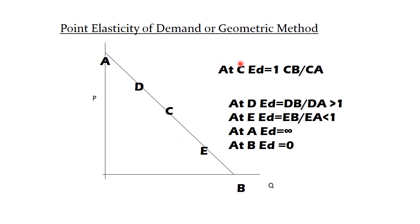At point D, lower segment is bigger, DB. Upper segment is DA. So elasticity is greater than 1. At point E, lower segment is smaller, EB. And upper segment is EA, which is bigger. So elasticity is less than 1.